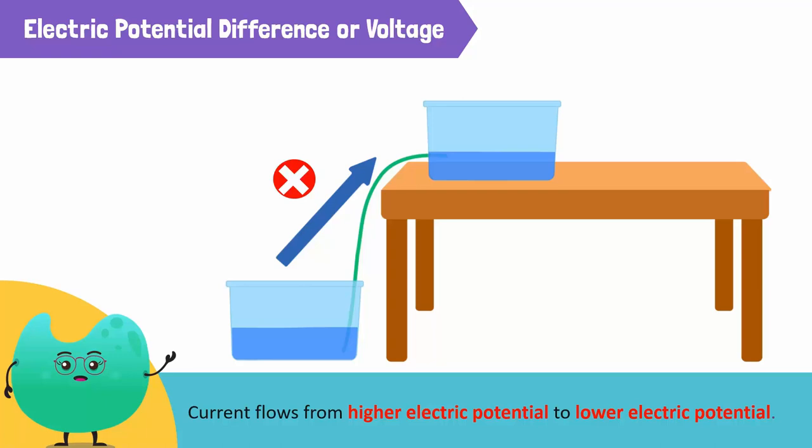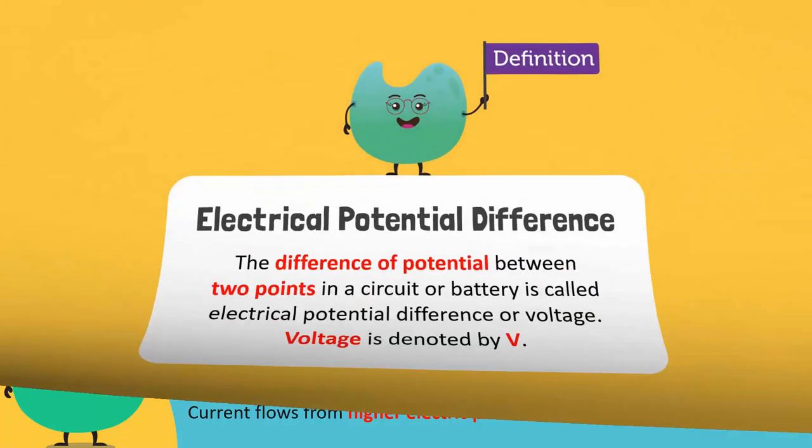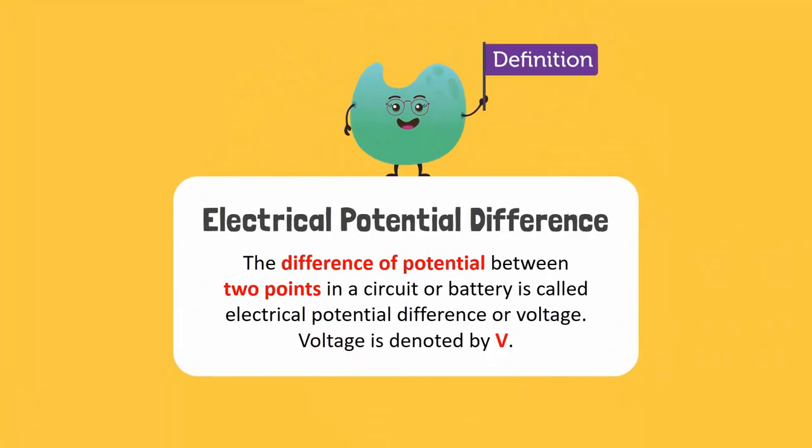Similarly, current flows from higher electric potential to lower electric potential. The difference of potential between two points in a circuit or battery is called electrical potential difference or voltage.